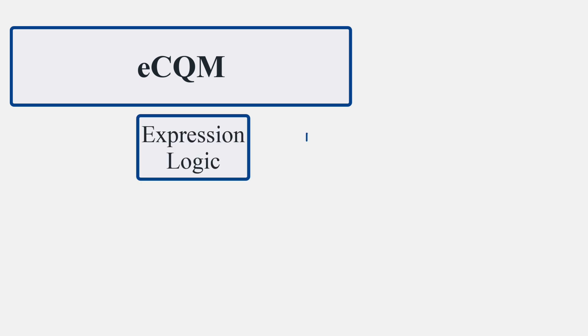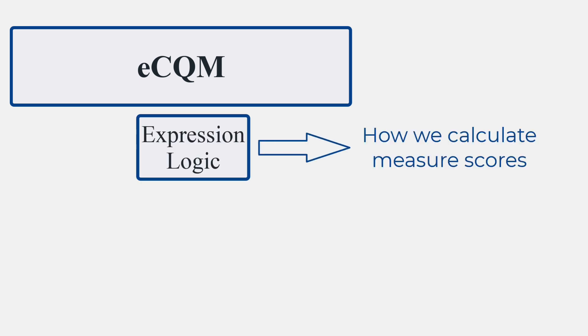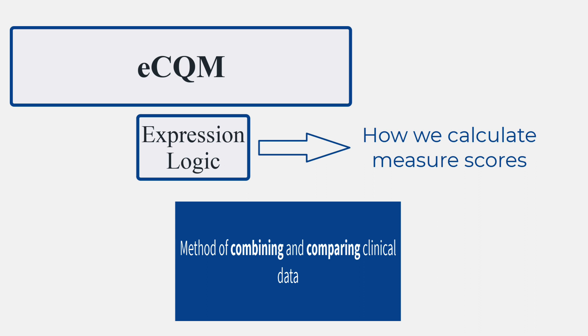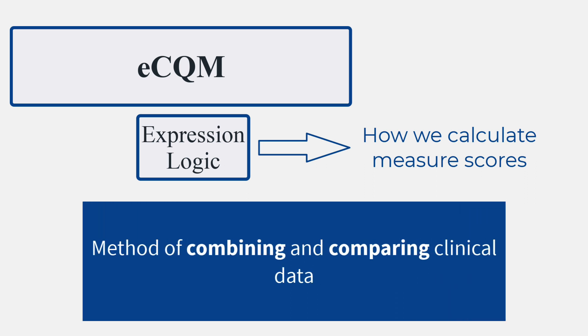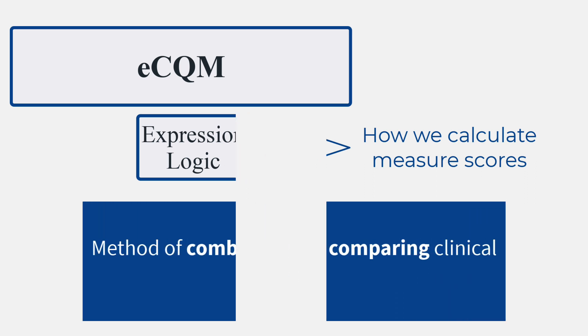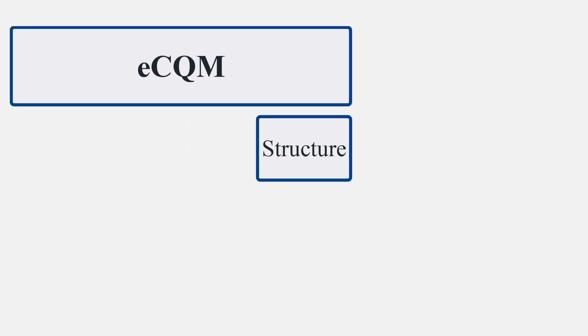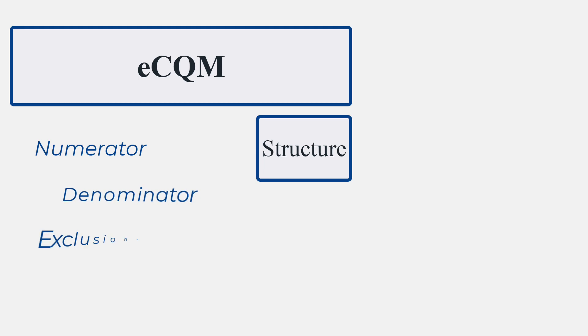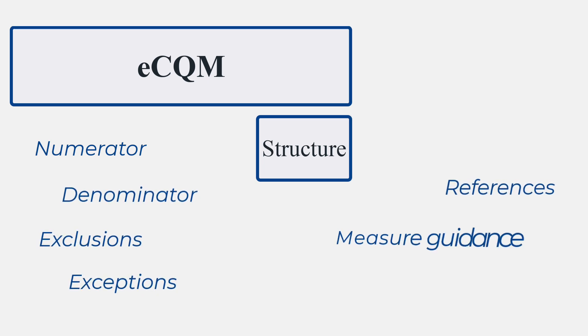Expression logic. Expression logic is how we calculate measure scores. It provides the method of combining and comparing clinical data. Structure. A standard structure for measure information includes fields such as the numerator, denominator, exclusions, exceptions, and additional metadata such as references and measure guidance.